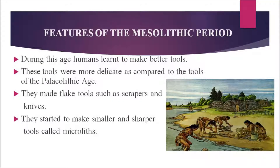During the Mesolithic age, humans learned to make better tools. These tools were more delicate compared to the tools of the Paleolithic age. They made flake tools such as scrapers and knives, and started to make smaller and sharper tools called microliths. Tools were more finely crafted than those made in the Paleolithic period.